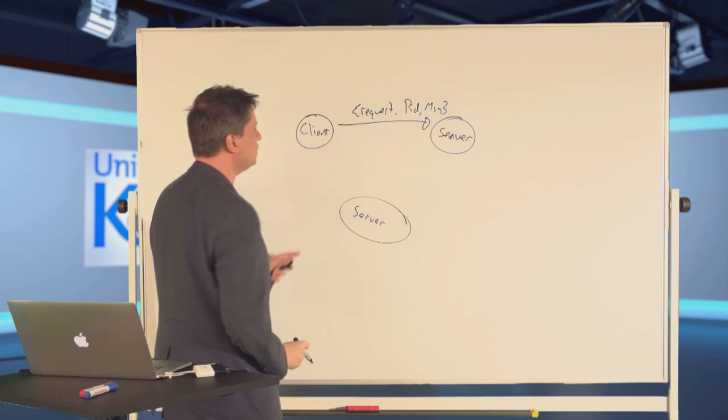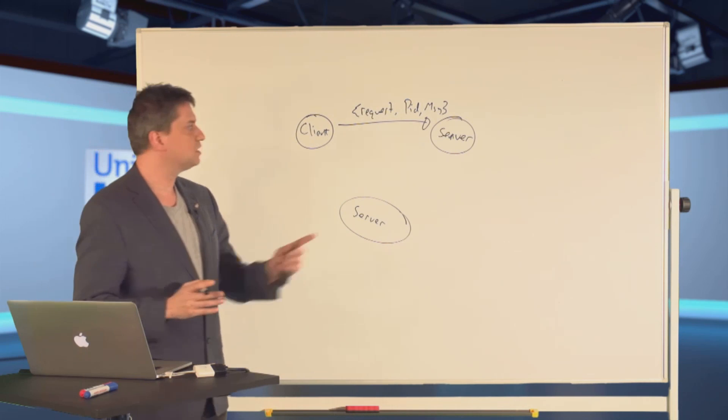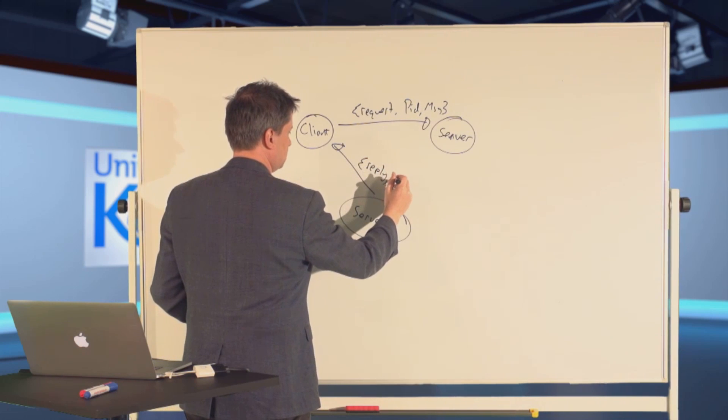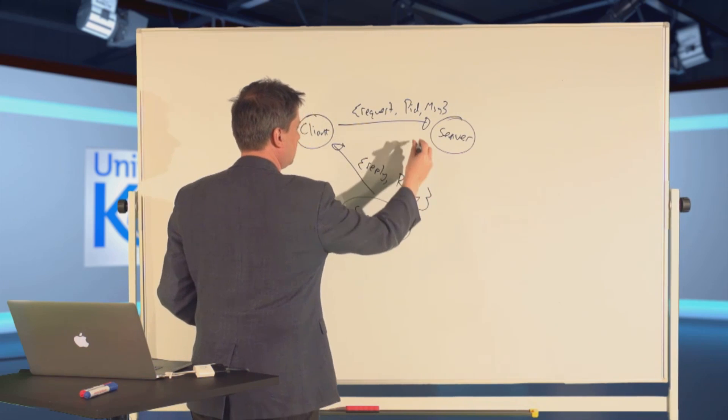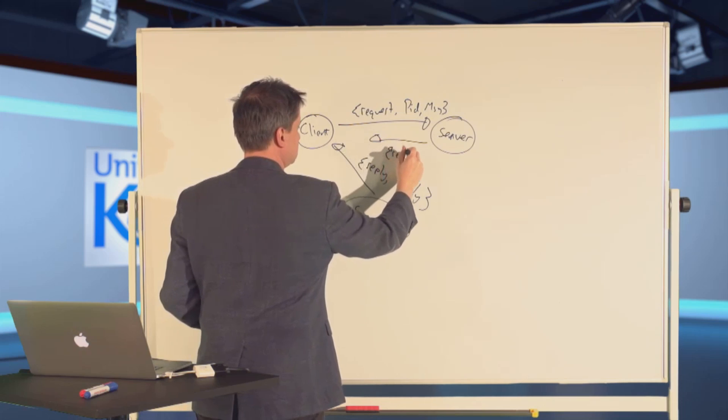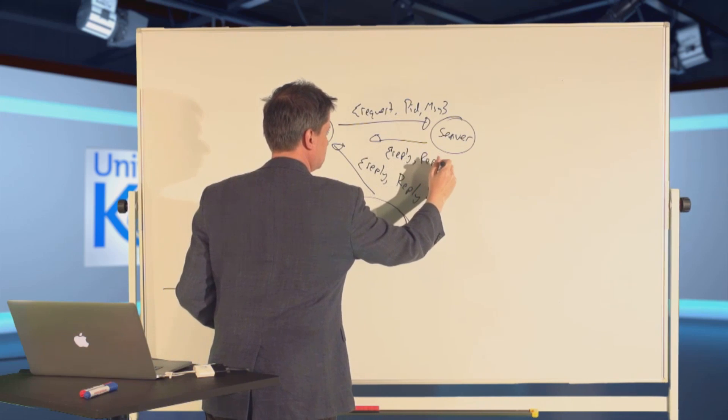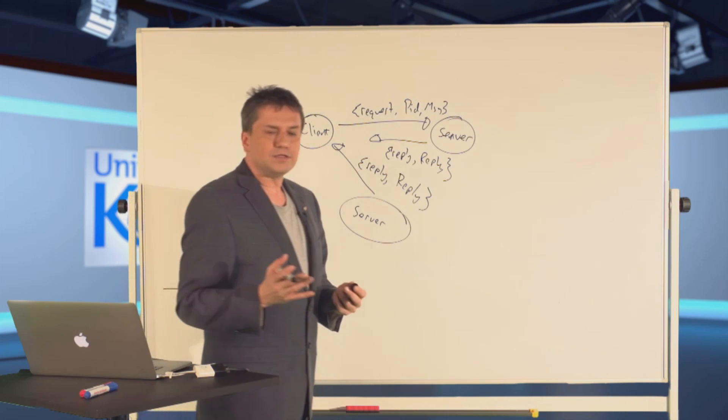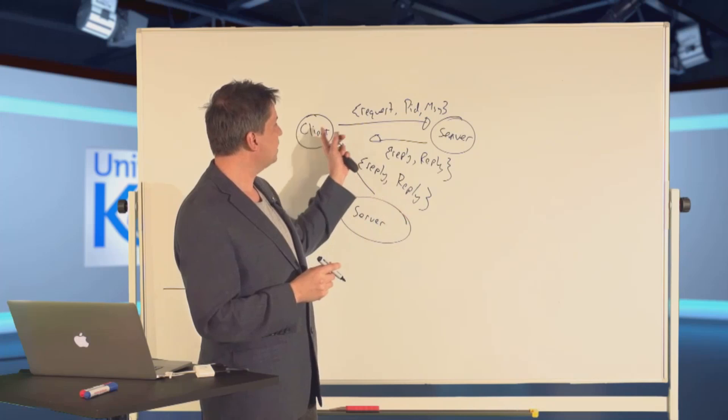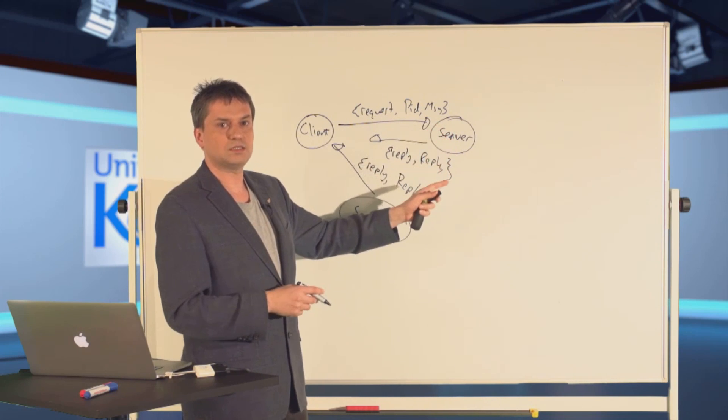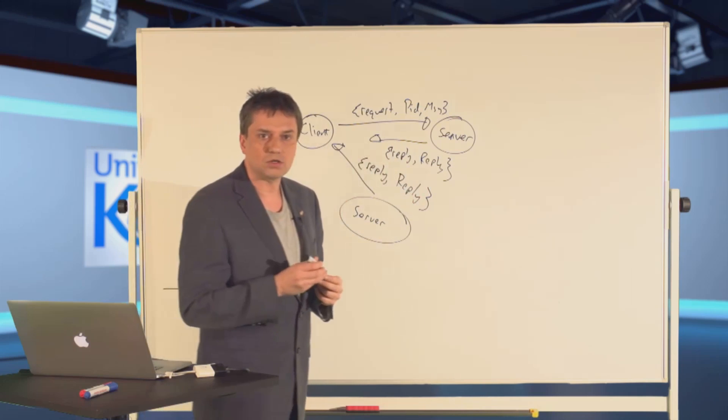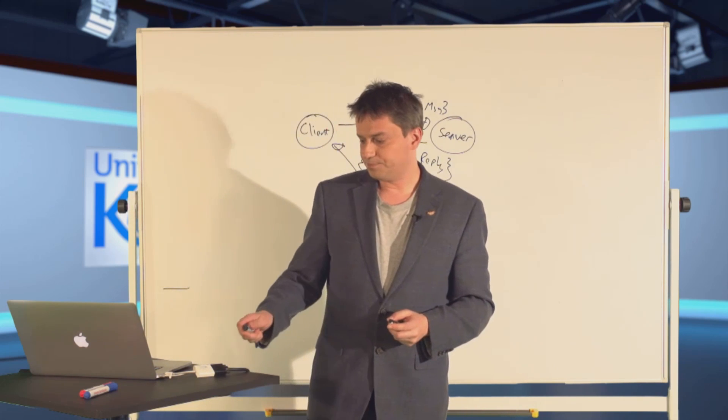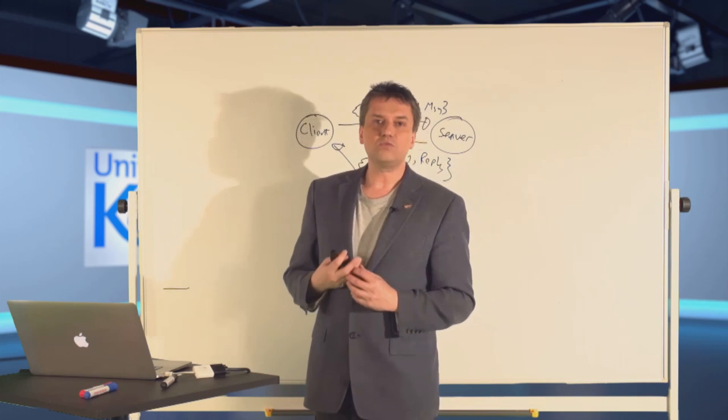How do we actually know that the response the client receives comes from the server and not from any other process? If we've got a race condition like this, this process might send a response of the form reply back to the client. The client is in a receive statement, it pattern matches, and believes that this reply is actually the reply from its original request, which isn't. This is one of the typical race conditions we see when dealing with concurrent programming.